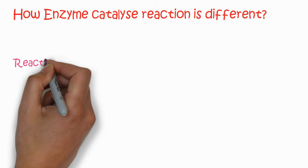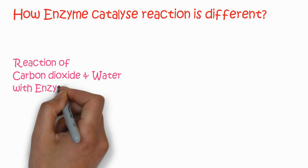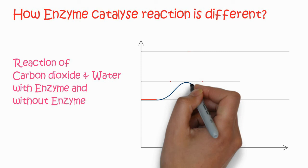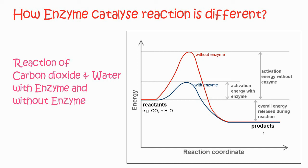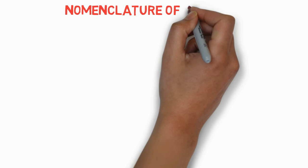How is an enzymatic reaction different from a normal non-enzymatic reaction? Taking the example of carbon dioxide and water: the blue curve represents the reaction with enzyme and the red curve is the reaction without enzyme. On the reaction coordinate diagram, a high activation energy is required without enzyme, whereas a much lower activation energy is required in the case of enzyme catalysis.